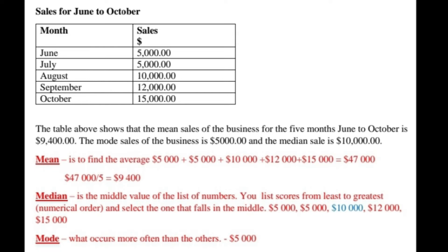Now the mode is what occurs more often than the others. In this case, we see that $5,000 is showing up twice, and it's the only one that has shown up twice, so the mode is $5,000. You could write your analysis like this: the table above shows that the mean sales of the business for the five months June to October is $9,400, the mode sales is $5,000, and the median is $10,000. This is another way that you can describe what is shown in the table. Let's look at another way.